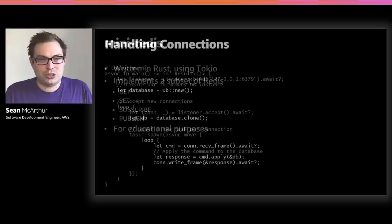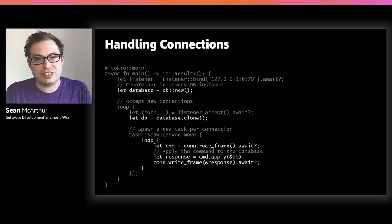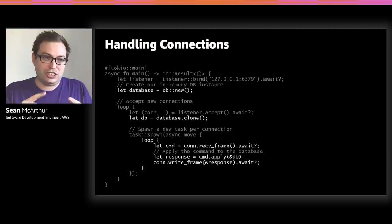The first thing we have to do is make the entry point to the application. It's very similar to the Hello World and all the other examples that Carl was showing earlier — we accept connections, spawn tasks, it looks very similar. I just highlighted the differences here, the interesting parts we want to focus on for our example. And that is: there's a database — the in-memory database part — and then with each connection, we apply commands to the database.